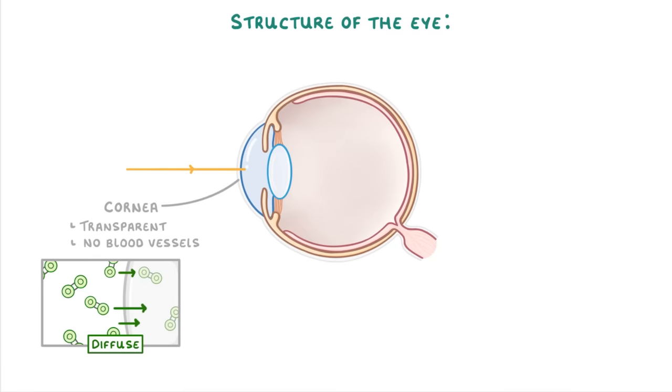This means that all the oxygen it needs has to diffuse into it from the outside air, rather than being supplied by the blood like everywhere else in the body.